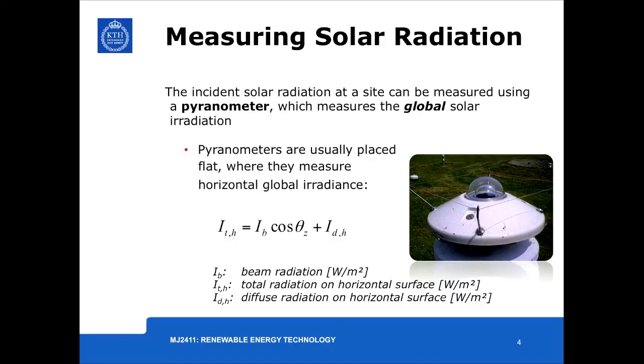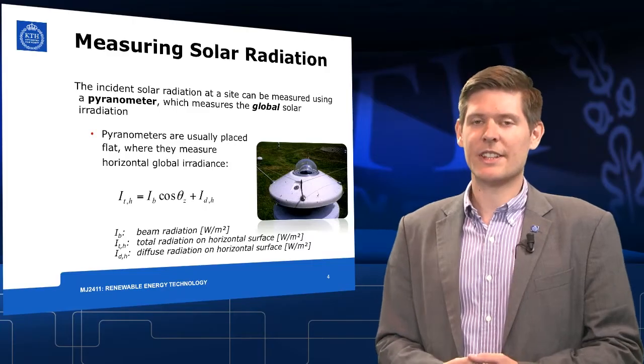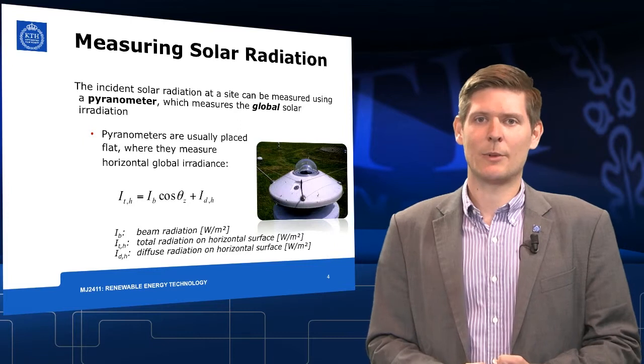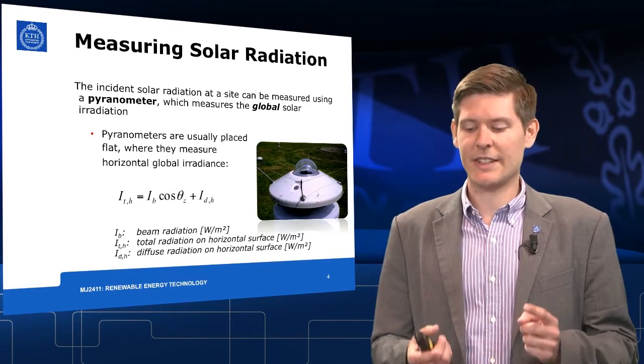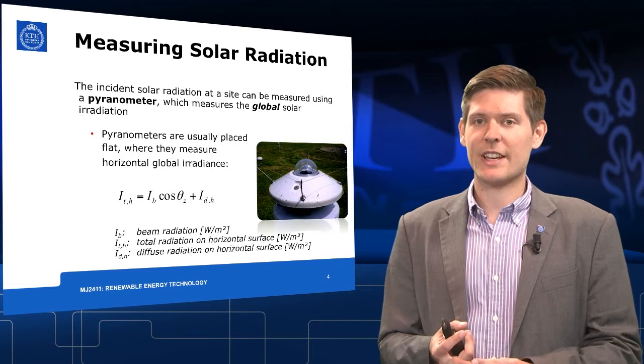Pyranometers are usually placed flat on the ground and measure the total or global irradiation. The total or global irradiation can be calculated when knowing the beam radiation, the incidence angle and the diffuse radiation.